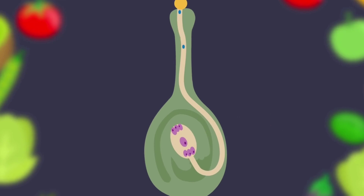The male sex cell travels down the pollen tube to the female ovule. One male sex cell fuses with the female egg to fertilize it, which further develops into a seed. The other male sex cell attaches to two cells in the embryo sac forming an endosperm, which provides nourishment for the seed to grow. The ovary enlarges and becomes the fruit.